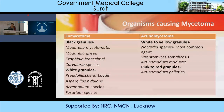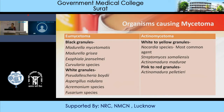In Actinomycetoma, granule color is generally white to yellow, and the responsible agents are Nocardia, which is the most common agent, Streptomyces somaliensis, and Actinomadura madurae. Pink to red granules are generally produced by Actinomadura pelletieri.